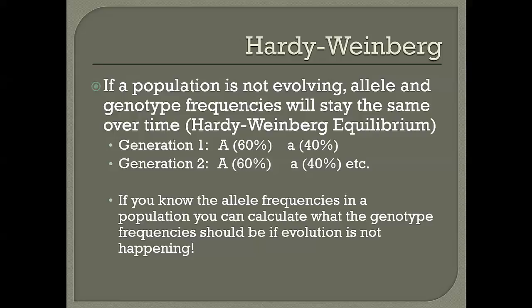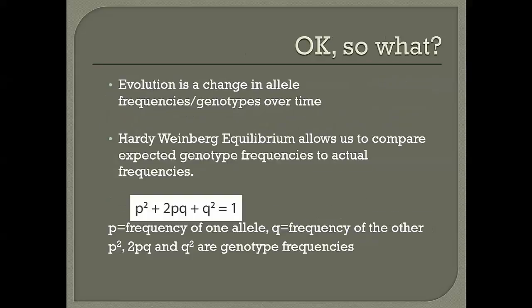What Hardy-Weinberg lets you do: if you know the allele frequencies in a population, you can calculate what the genotype frequencies should be if the population is not evolving. You can predict genotype frequencies from allele frequencies, then compare the prediction to what you actually observe. Evolution is measured as a change in allele frequencies over time.